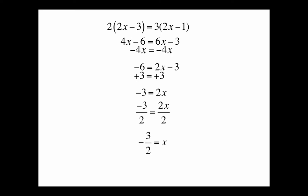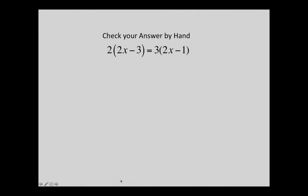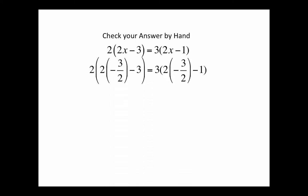So there's our solution, but we always check our answers, so let's check our answer by hand. We take the original, and then we're going to put in our solution into the equation for x. So we put in negative 3 halves where the x's are.